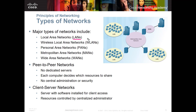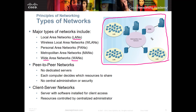When you connect local area networks to other networks, you get a wide area network (WAN). The Internet is an example of a wide area network — it's a lot of local area networks or local devices that connect into a cloud or a wide area network.